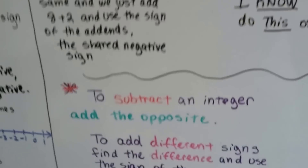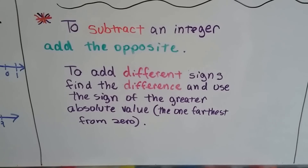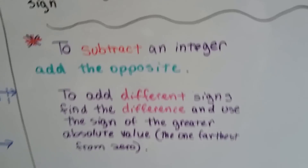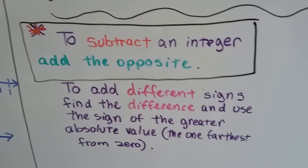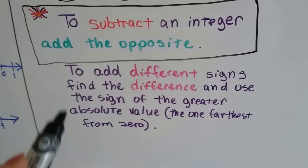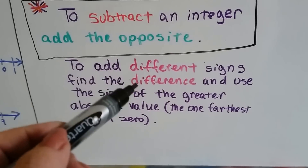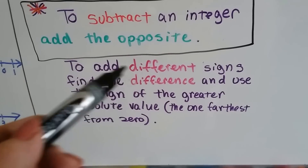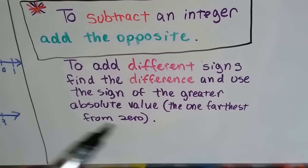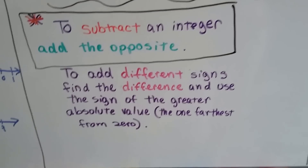So this is what we need to remember: to subtract an integer, you add the opposite. Try to remember this rule — this is huge. To subtract an integer, add the opposite. And here's the other one: to add different signs, find the difference between them. Remember: different, difference. If you're adding different signs, you find the difference, and then you use the sign of the greater absolute value — the one farthest from zero.